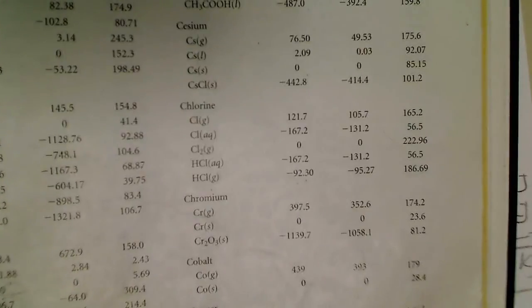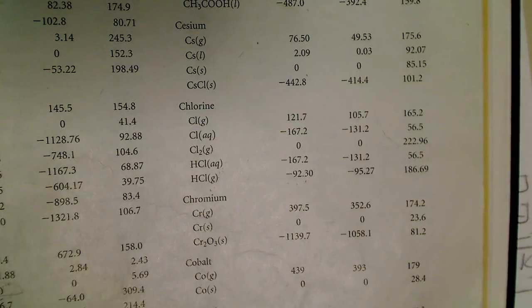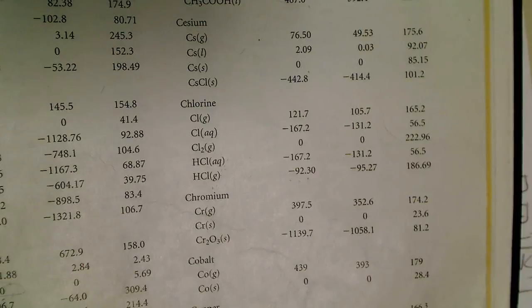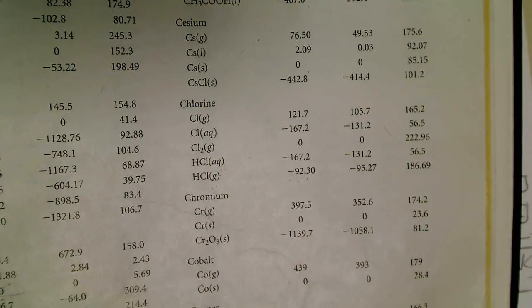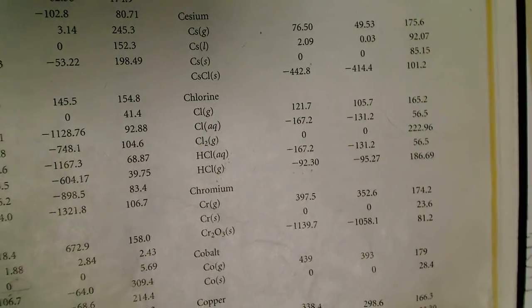the value for hydrogen chloride from the back of the book, if I focus that, oh there it goes, is negative 92.3. So that's for the hydrogen chloride in the gas phase, which is different than the hydrochloric acid aqueous. So that's negative 92.3.